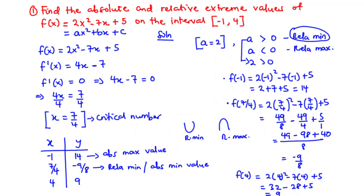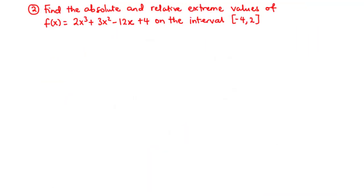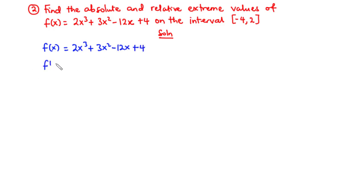Now let's move on to the next question. For the second question, we have a cubic function: f(x) = 2x³ + 3x² - 12x + 4. First, let's find f'(x). The derivative of 2x³ becomes 6x². The derivative of 3x² becomes 6x. The derivative of -12x becomes -12. When you differentiate a constant, you have 0. So f'(x) = 6x² + 6x - 12.